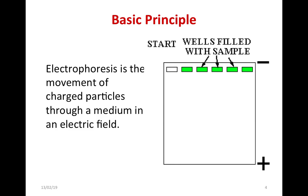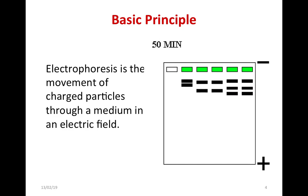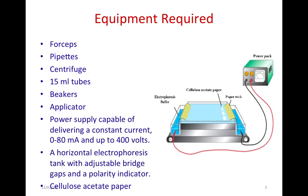The charge differences in hemoglobin allow these proteins to be separated in an electric field using the electrophoresis technique. The instruments required are mainly a power pack and a horizontal electrophoresis unit, in addition to forceps, pipette, centrifuge, 15 ml tubes, beakers, and an applicator.